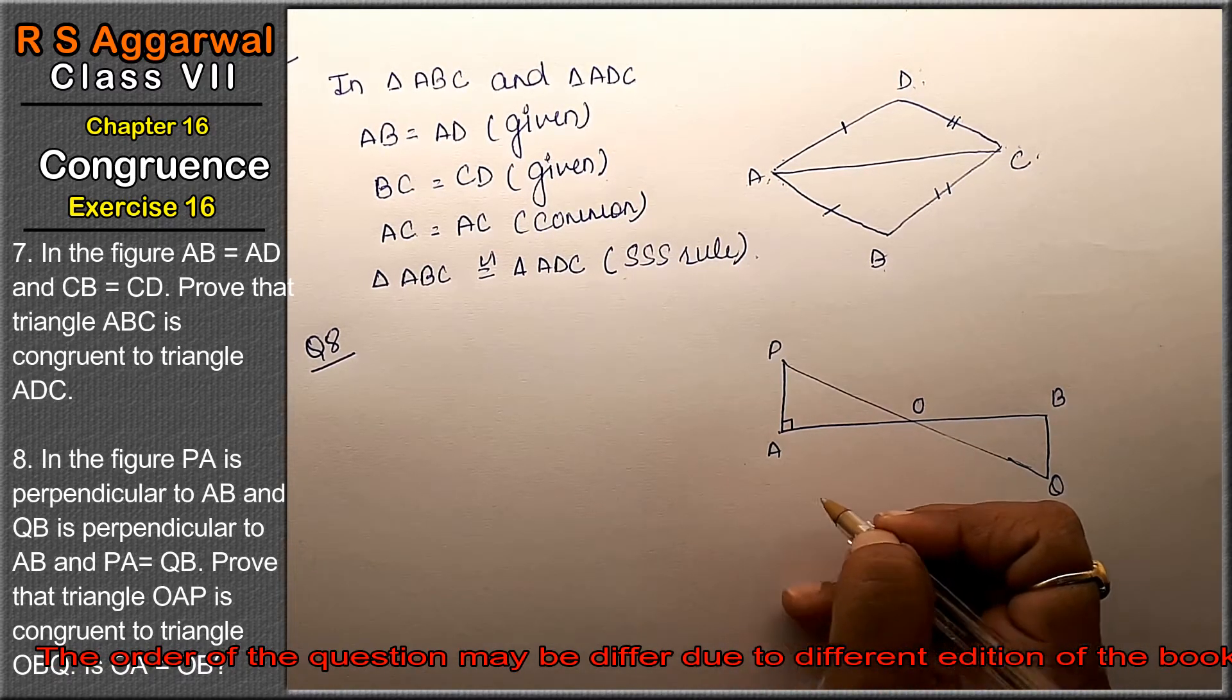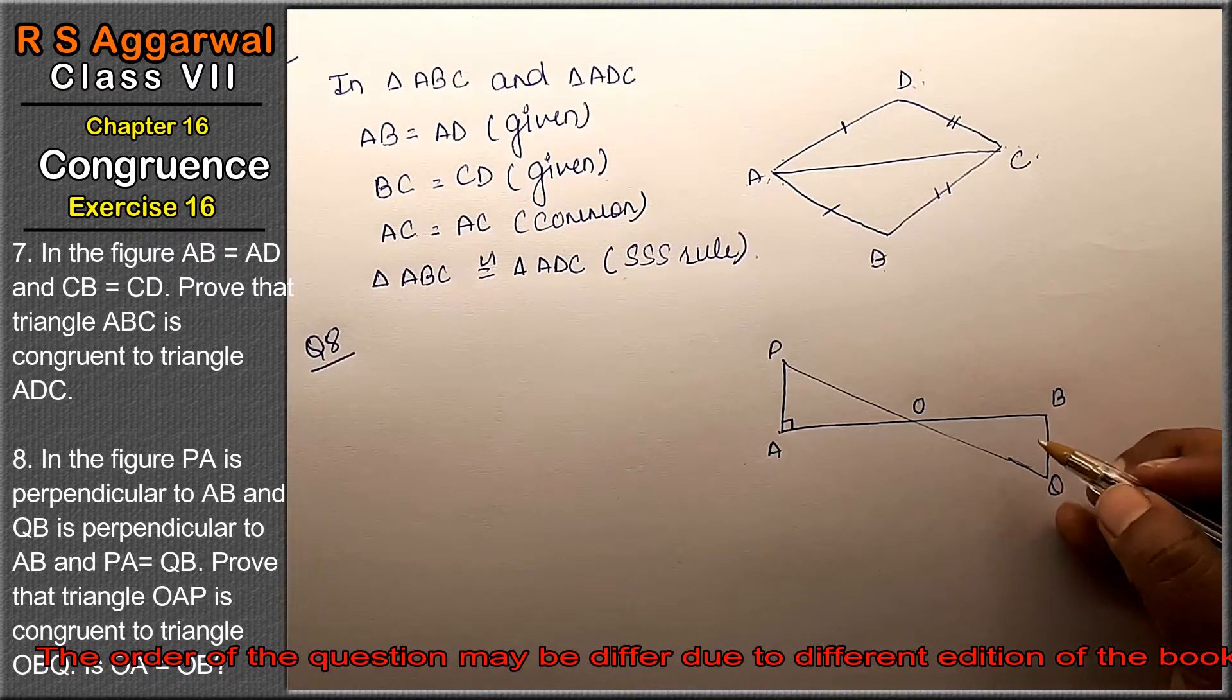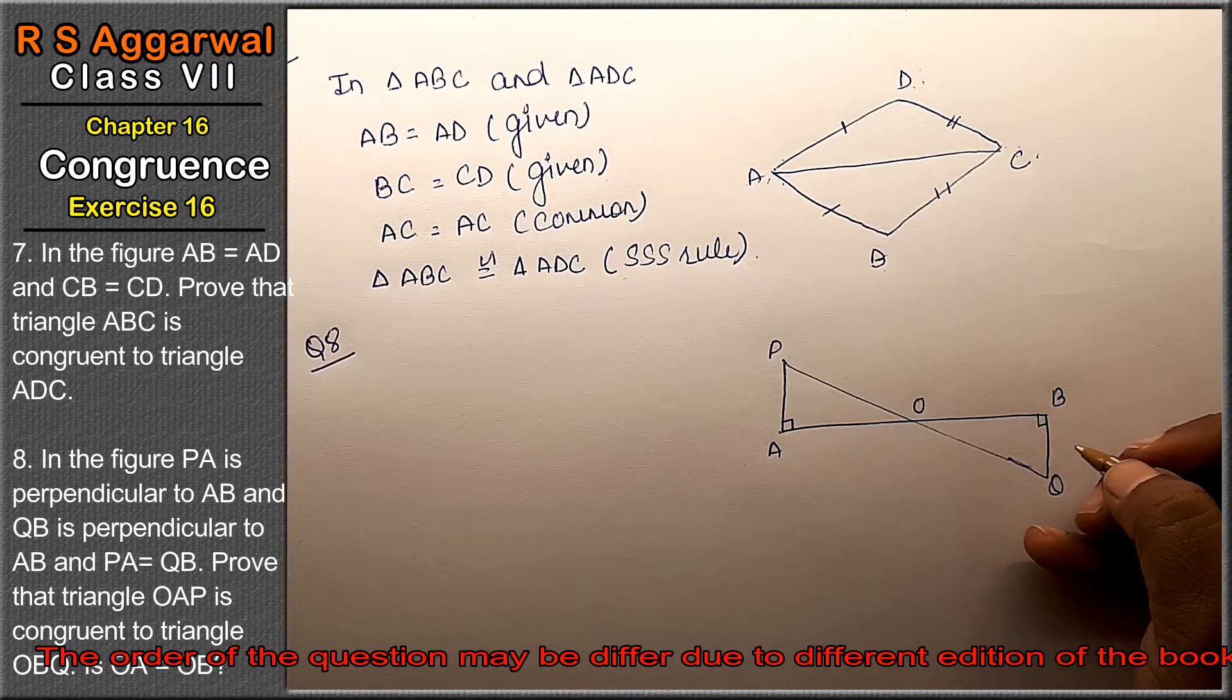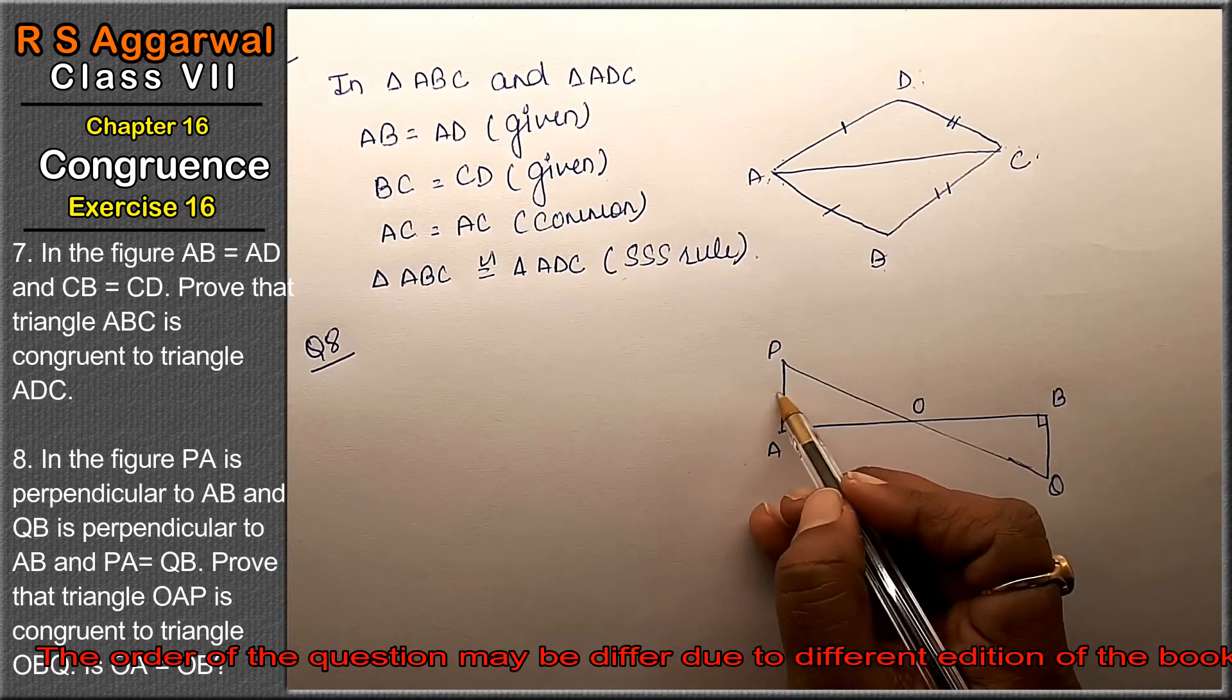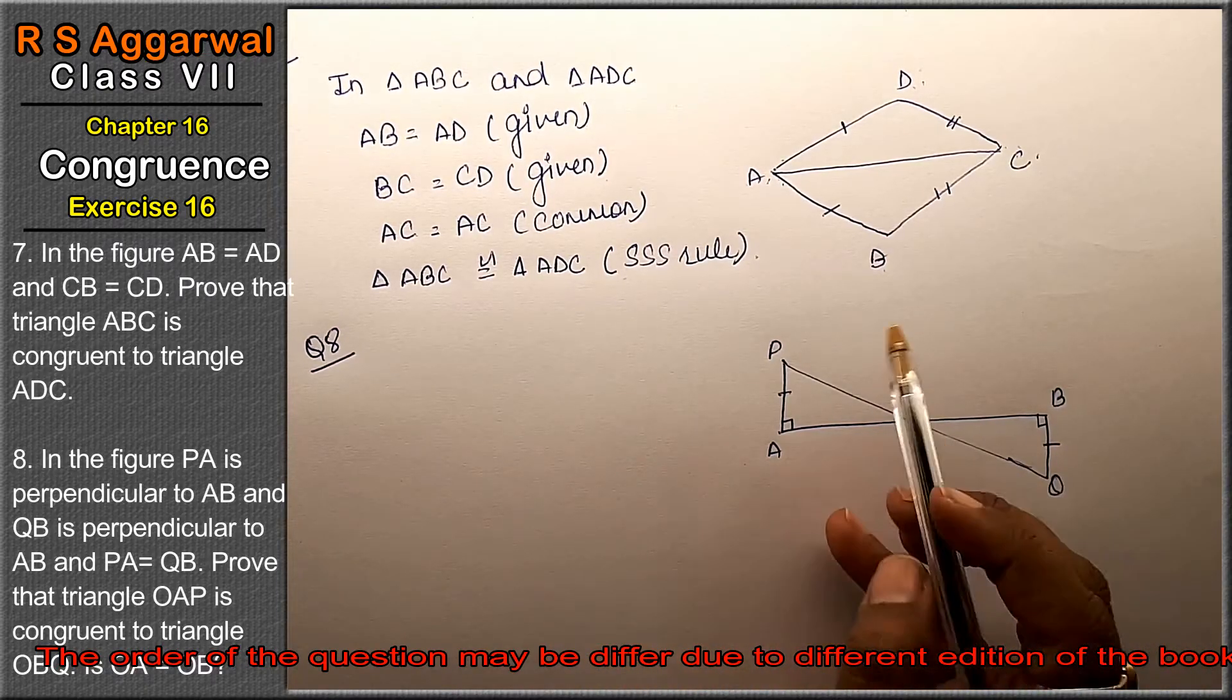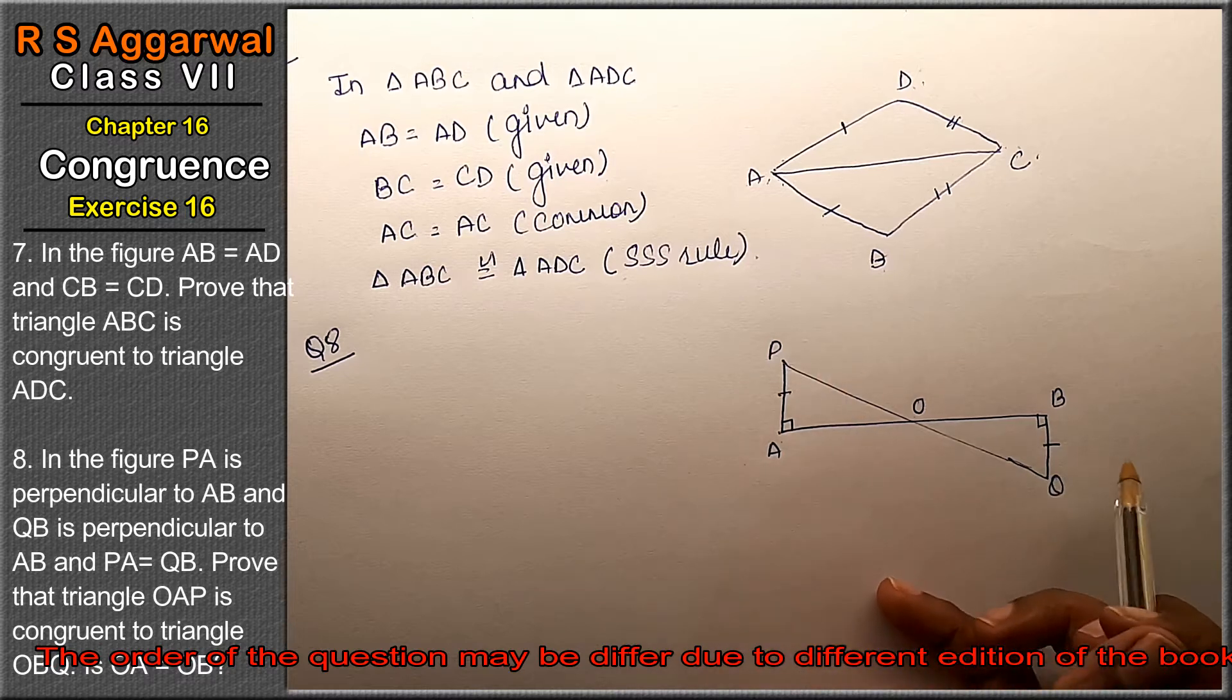That means 90 degree angle. PA is perpendicular, 90 degree angle. PA equals QB. Prove that triangle OAP is congruent to triangle OBQ.